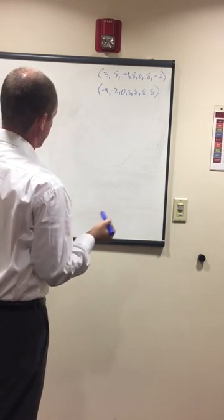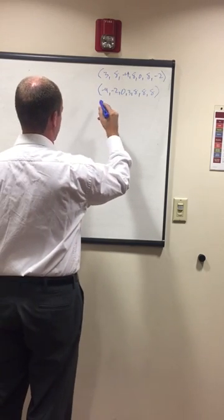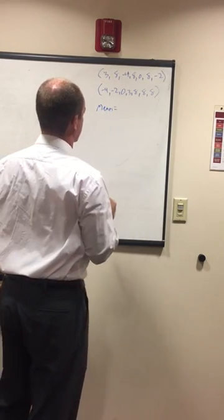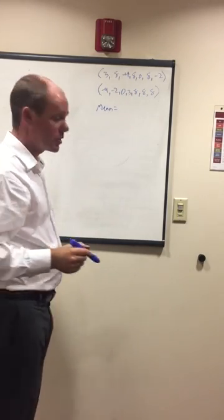So what's the first thing we want to look at? Mean, maybe? It doesn't really matter which one we start with. It just depends on what the question was, I guess. Mean. So that's add them all up and divide by the total number of terms.